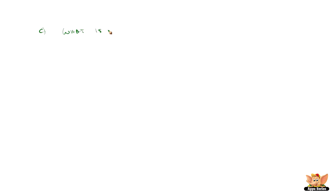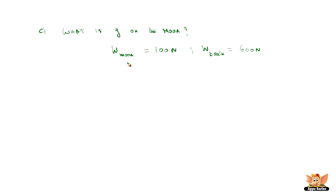Going to the third part of the problem: what is g on the moon, the acceleration due to gravity on the moon? We know the weight of the man on the moon is 100 Newton and on the earth is 600 Newton. Weight is given by m into g on the moon, and weight on earth is given by m into g on the earth.